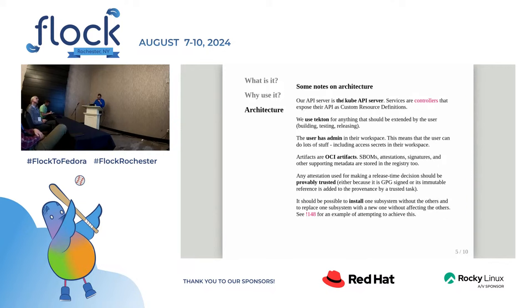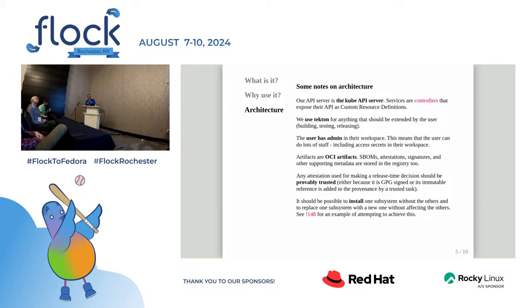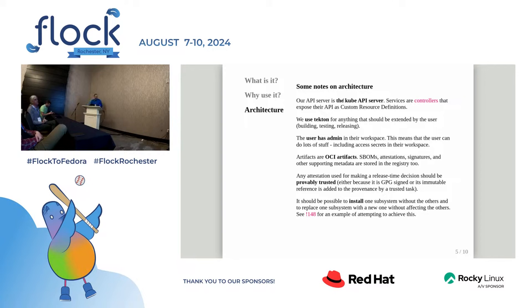For understanding Conflux's architecture — the systems that make up the build and release system in Fedora today, like Koji and Bodhi, each expose their own API server. As a user you have to know what all those things are. For development and maintenance, each gets its own bespoke REST API implementation, performing its own authentication and authorization checks. We have to take care that each of those API servers are deployed consistently. With Conflux, we have a single API server — the Kubernetes API server, OpenShift in our case for production use.